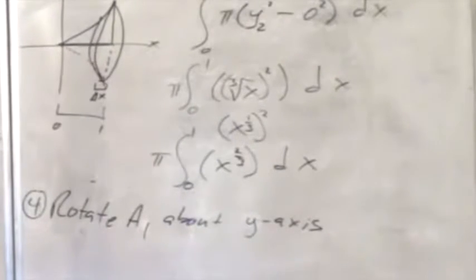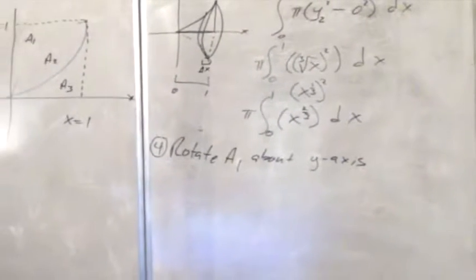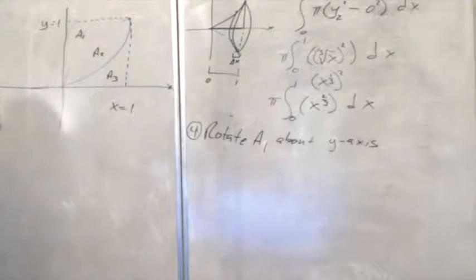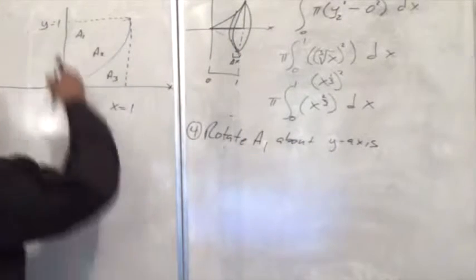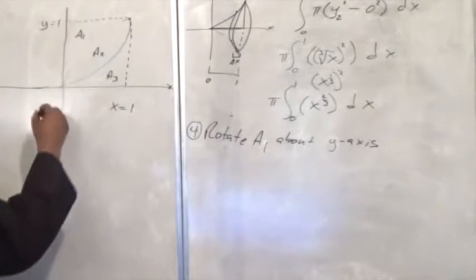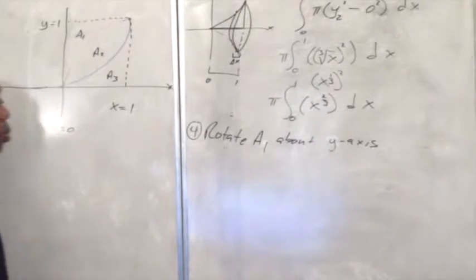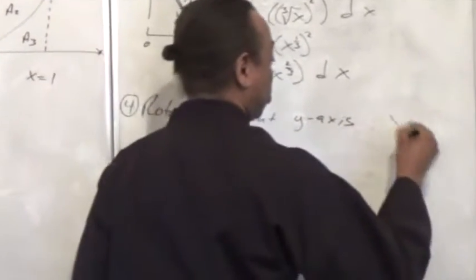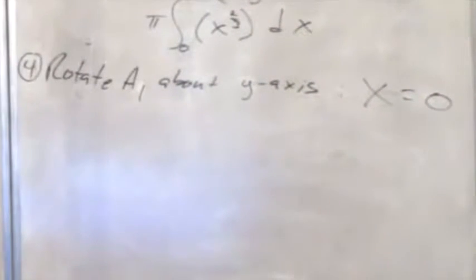Next, we want to find Area 1, and we're going to rotate that about the y-axis. The y-axis is here — the y-axis is where x is equal to 0. So we're rotating this about x equals 0.